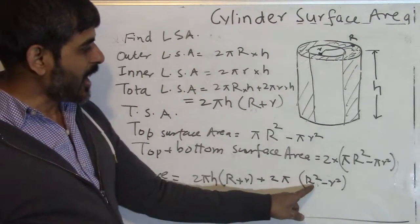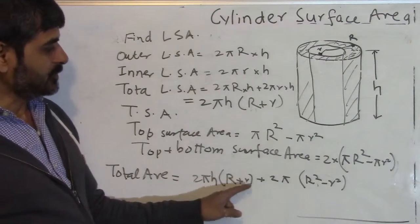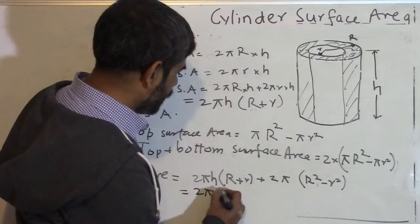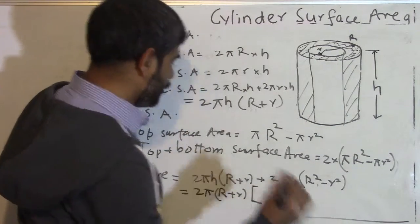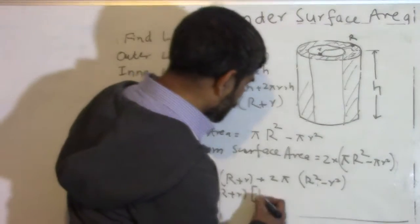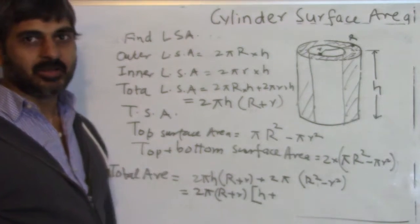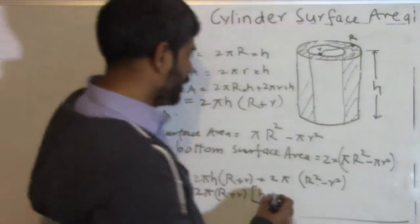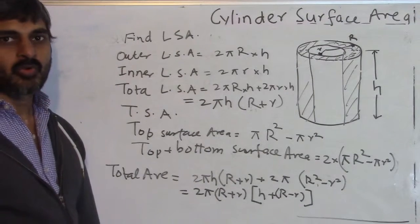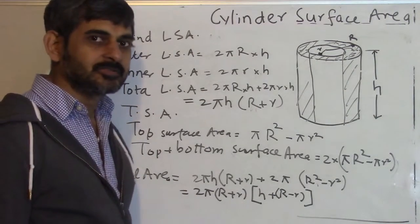We can further simplify by factoring: R² − r² = (R + r)(R − r). Taking 2π(R + r) as a common factor, we get the simplified total surface area = 2π(R + r)(R − r + H). This is the type of question you may be asked, and I hope you can follow it.